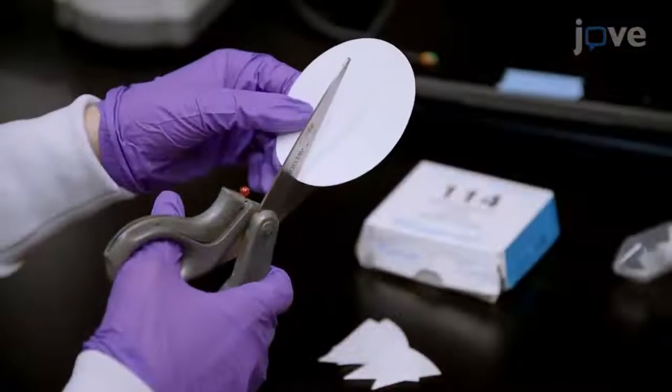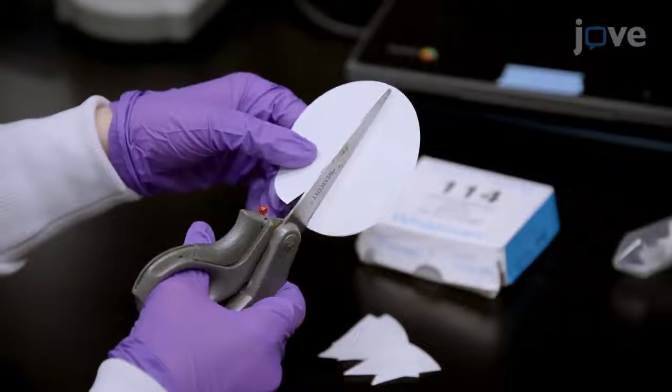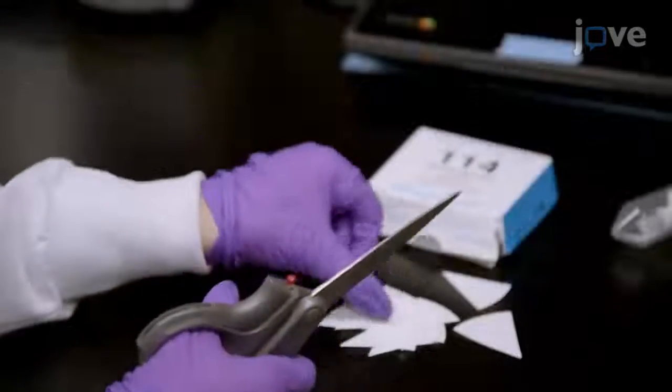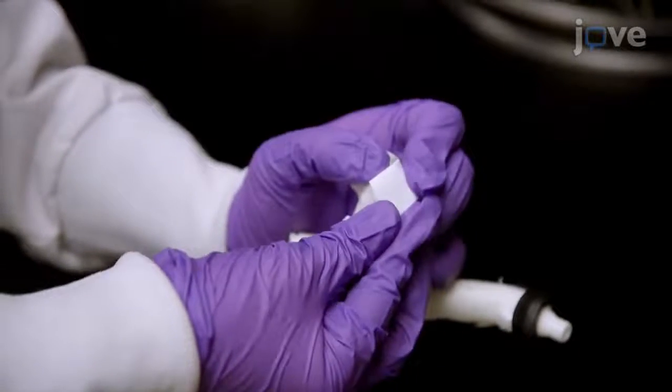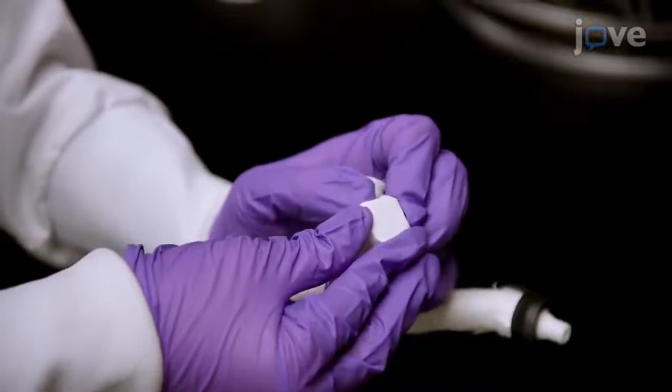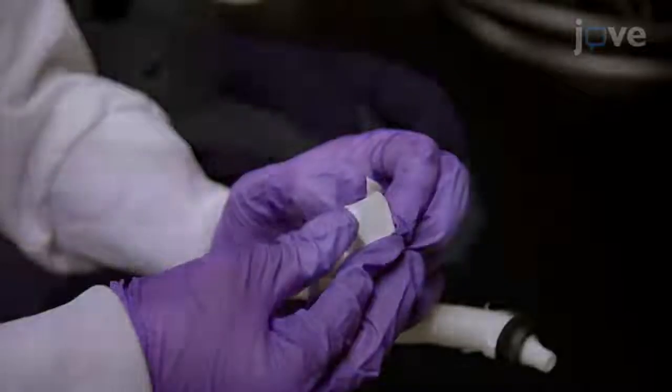Next, cut 10 micrometer filter paper to a size slightly larger than the outlet area and fold the filter paper over the lobe outlet, holding the paper in place with one hand. Then use tweezers in the other hand.